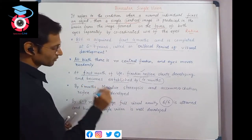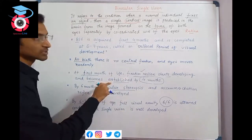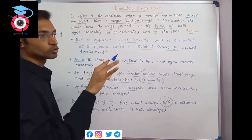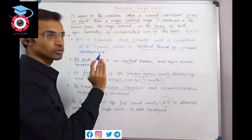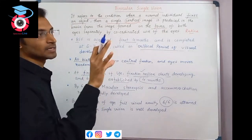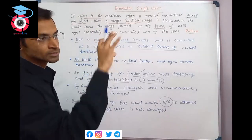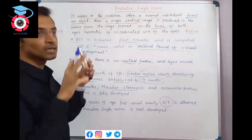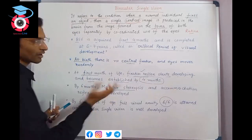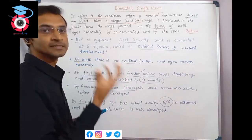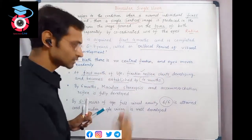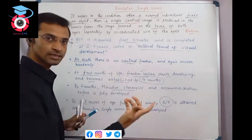By the 6th month, macular stereopsis begins to develop. Also, accommodation develops - accommodation is the capacity of the lens to change its curvature to focus on objects according to their distance.